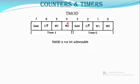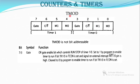It is not bit addressable — we have to call this particular register as a whole. You cannot address a single bit in this register. The higher-most bit in both halves, that is bit 7 and bit 3, function as gate bits. It is an OR gate enable which will control the run or stop of a timer. Bit 7 is the gate for timer 1 and bit 3 is the gate for timer 0.